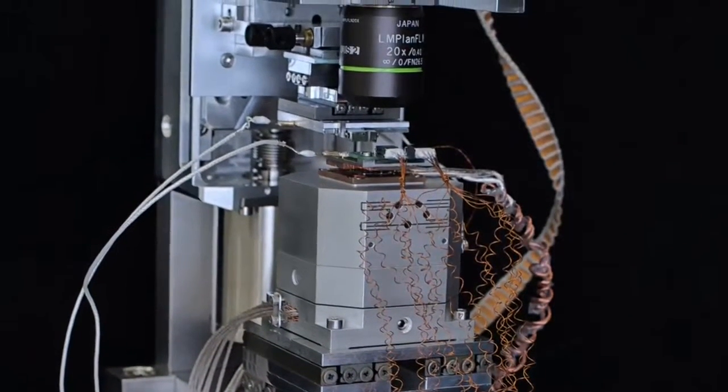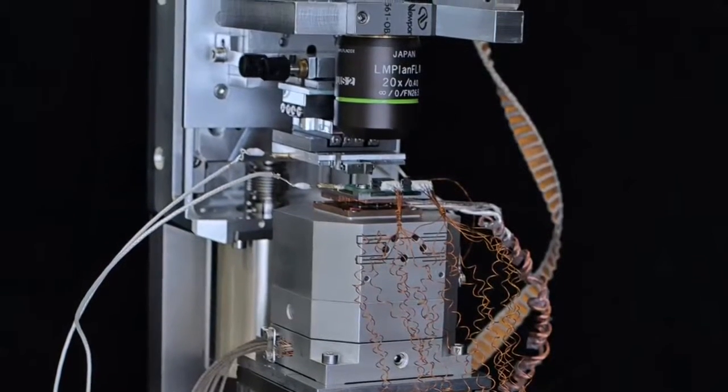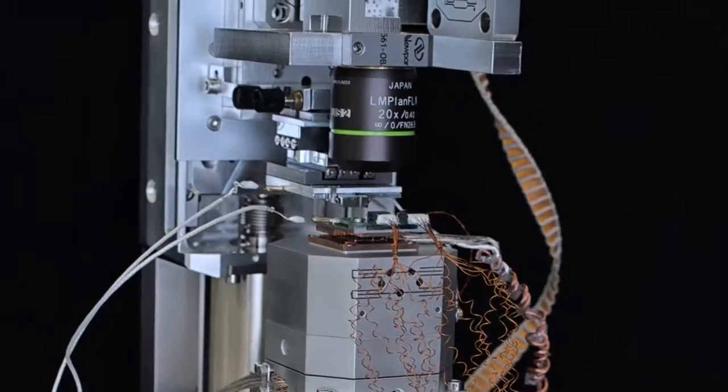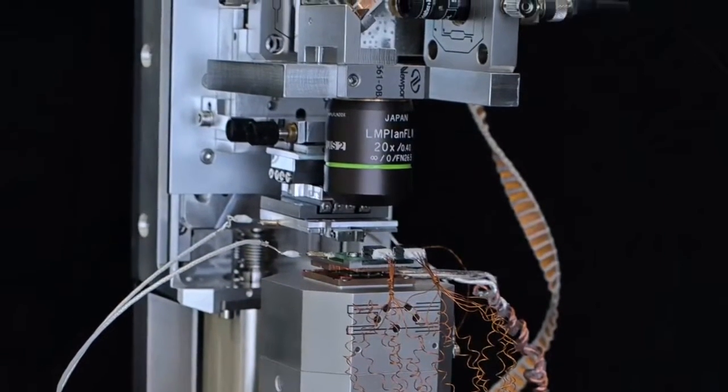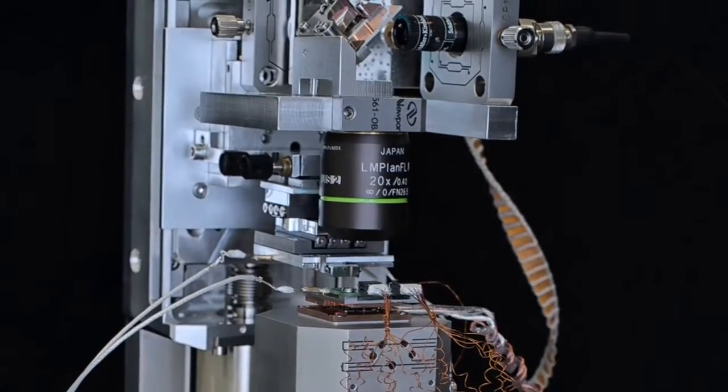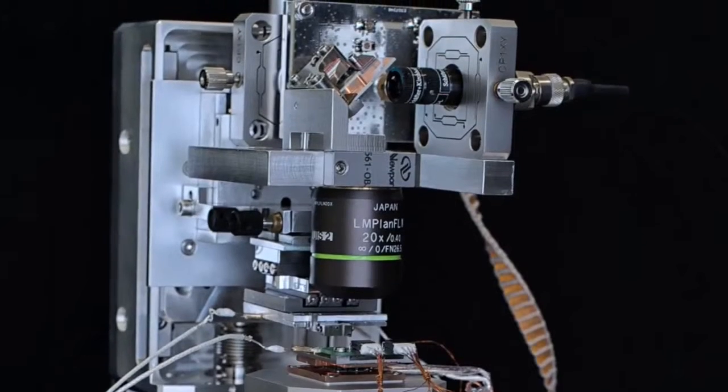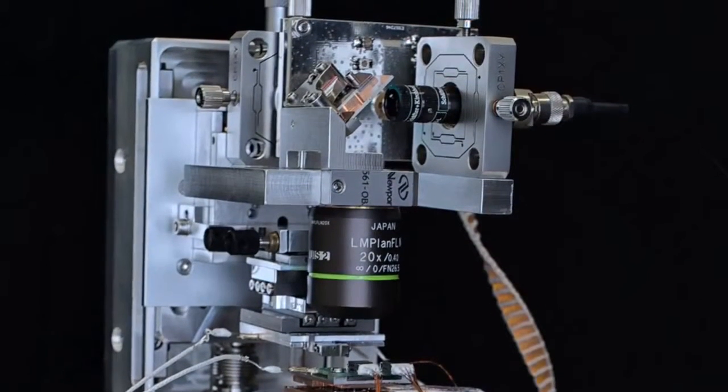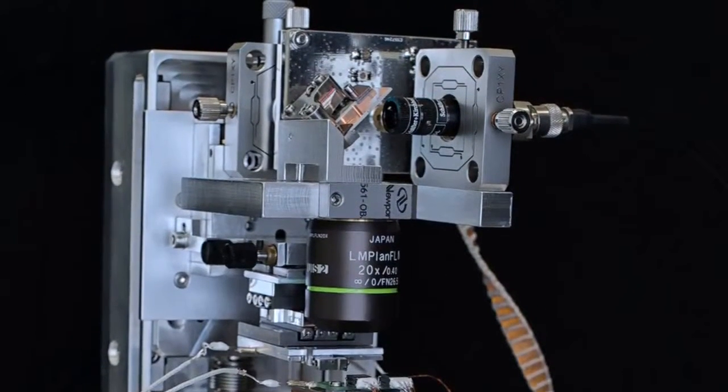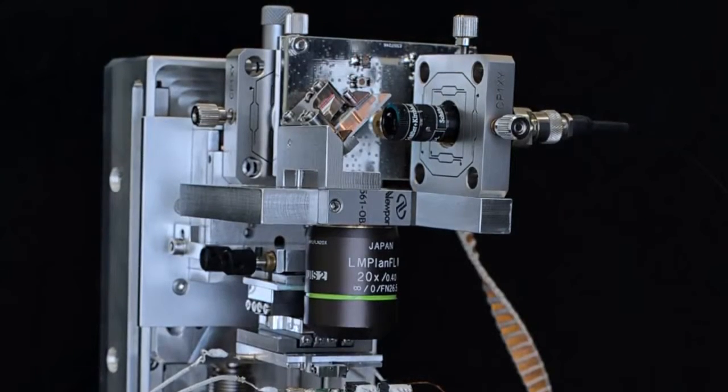Here we have the cantilever holder, where the actually sensing element of our thermal microscope is situated. And on the top part we have an optical beam deflection system, as you may find it also in a regular AFM, to detect the motion of the cantilever, which gives us information about the surface topography.